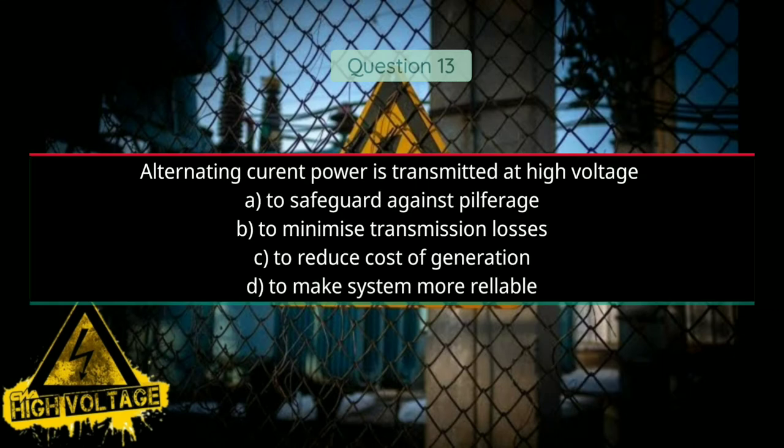Question number thirteen: Alternating current power is transmitted at high voltage — Option A: to safeguard against pilferage, Option B: to minimize transmission losses, Option C: to reduce cost of generation, and Option D: to make the system more reliable. Correct answer is B, to minimize transmission losses.